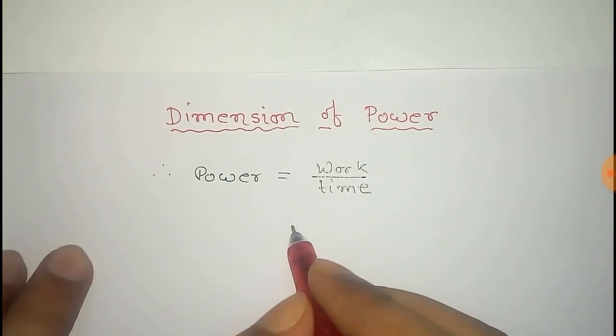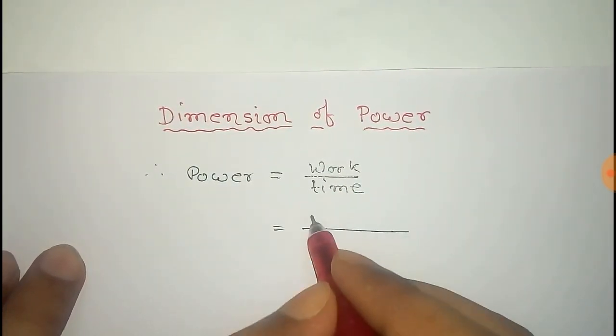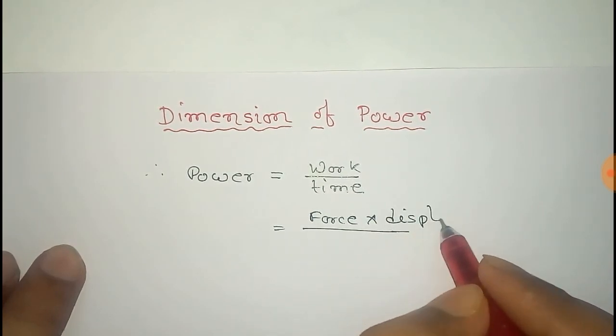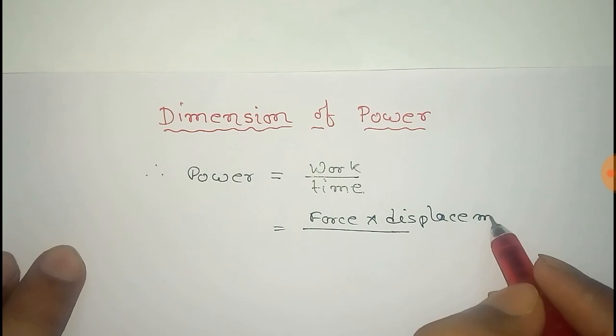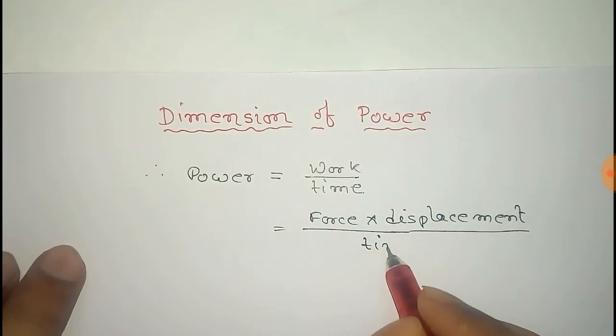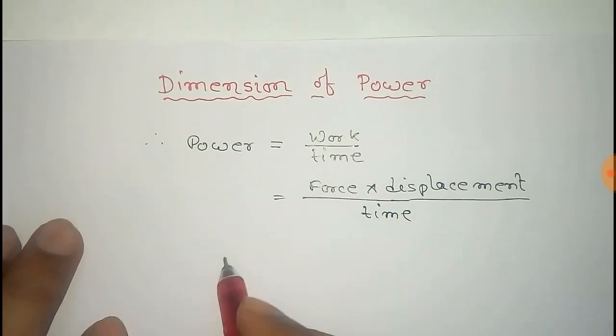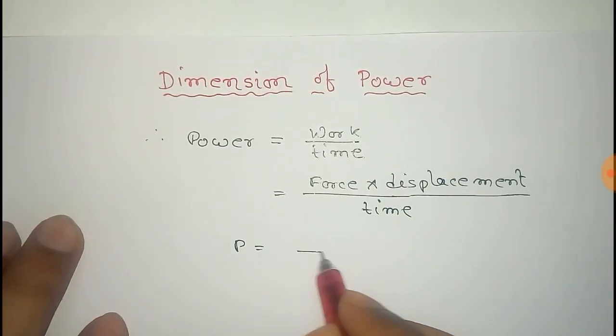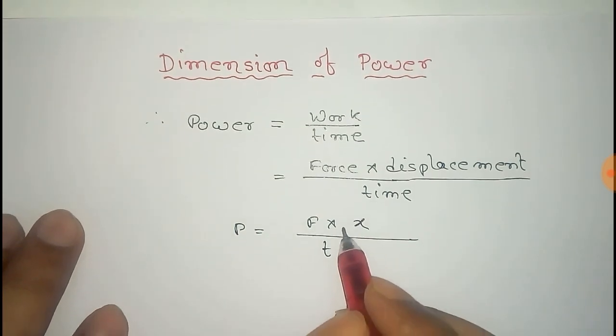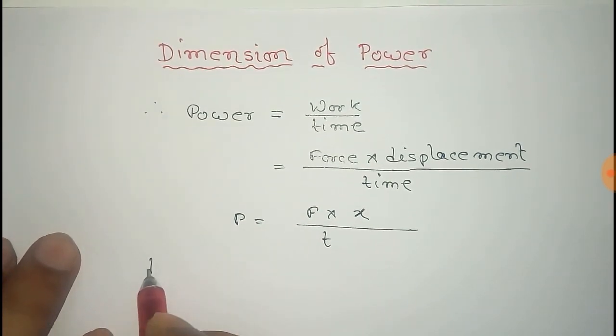Now we know that work equals force into displacement and that is divided by time. Now take power as P, that equals force as F, displacement X, and time T.